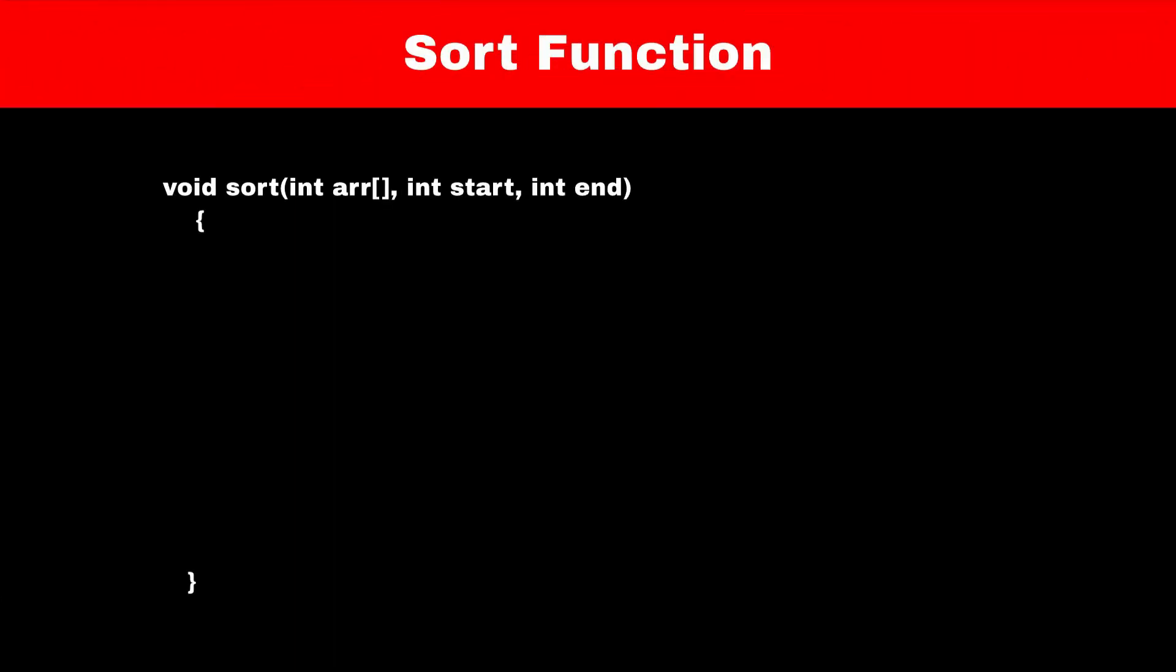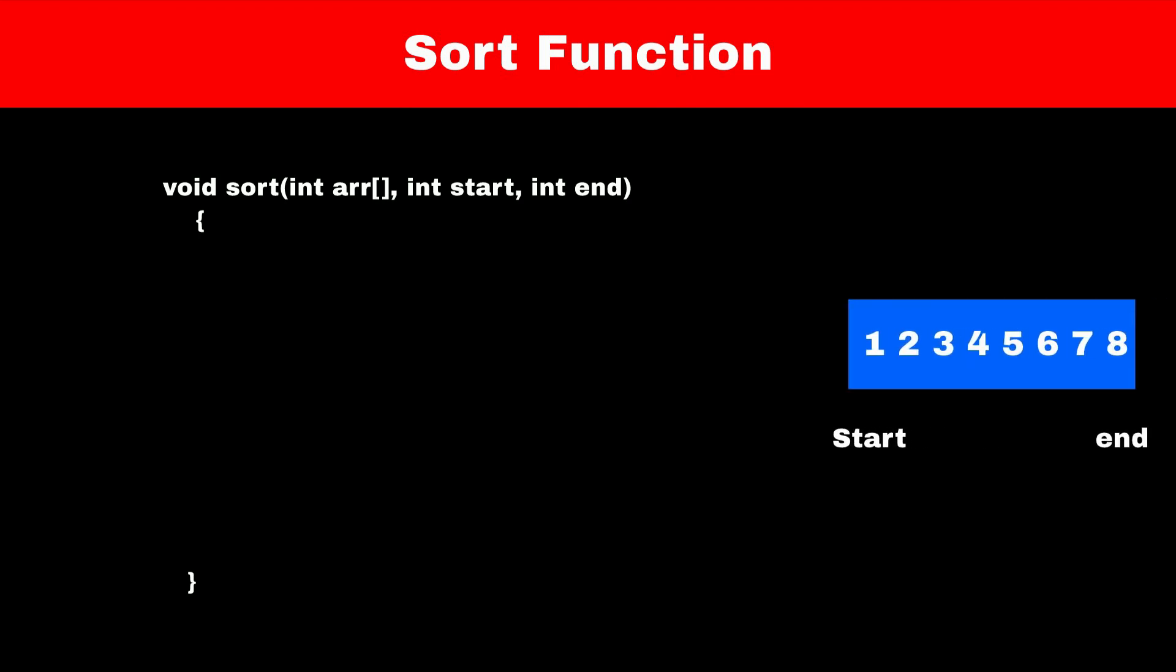Now let's create a sort function for merge sort which will take 3 parameters. First step is to divide a big array into 2 parts. The best way to divide big array into 2 parts is to split the array from middle. Let's find out the middle of array. We can calculate middle using start plus end by 2.